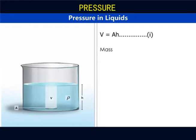The mass of the liquid column, M, is equal to volume times density. So M equals V times rho. Substituting equation 1 here, then M equals A h times rho. We call that equation 2.